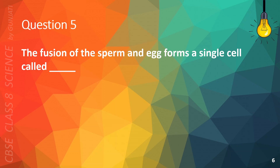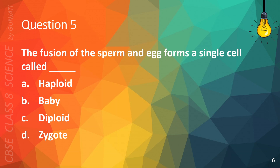Question 5. The fusion of the sperm and egg forms a single cell called: A. Haploid, B. Baby, C. Diploid, or D. Zygote. The correct answer is D. Zygote.